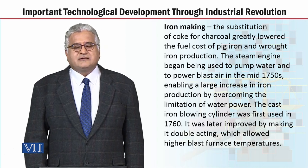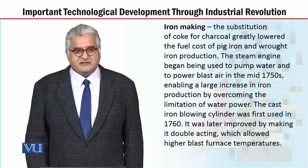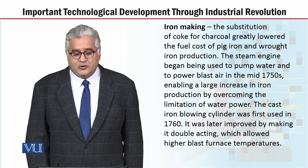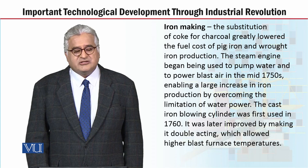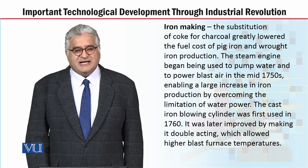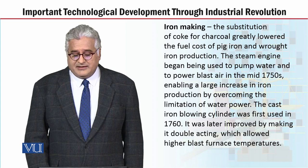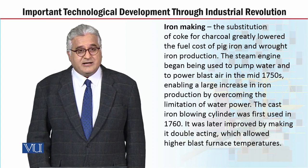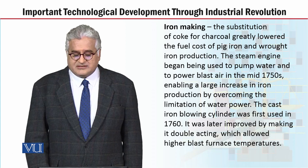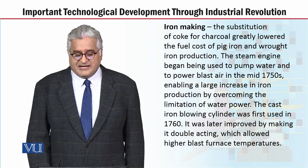Now let's move on to discuss what developments took place in iron making through the Industrial Revolution. The substitution of coke for charcoal greatly lowered the fuel cost of pig iron and wrought iron production. The steam engine began being used to pump water and to power blast air in the mid-1750s, enabling a large increase in iron production by overcoming the limitation of water power. The cast iron blowing cylinders was first used in 1760, and was later improved by making it double-acting, which allowed higher blast furnace temperatures.